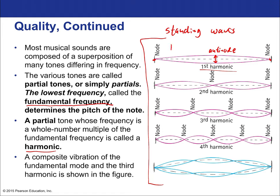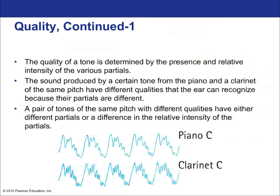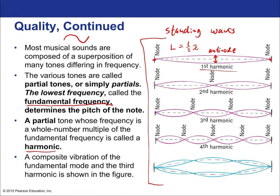We can say that L, the entire length from end to end, is equal to one half the wavelength. It's half the wavelength because this is only half of a complete wave — a full wavelength looks like a full cycle. The reason it's spread out is because we're imagining it vibrating up and down. That first harmonic has a special name: it is called the fundamental.